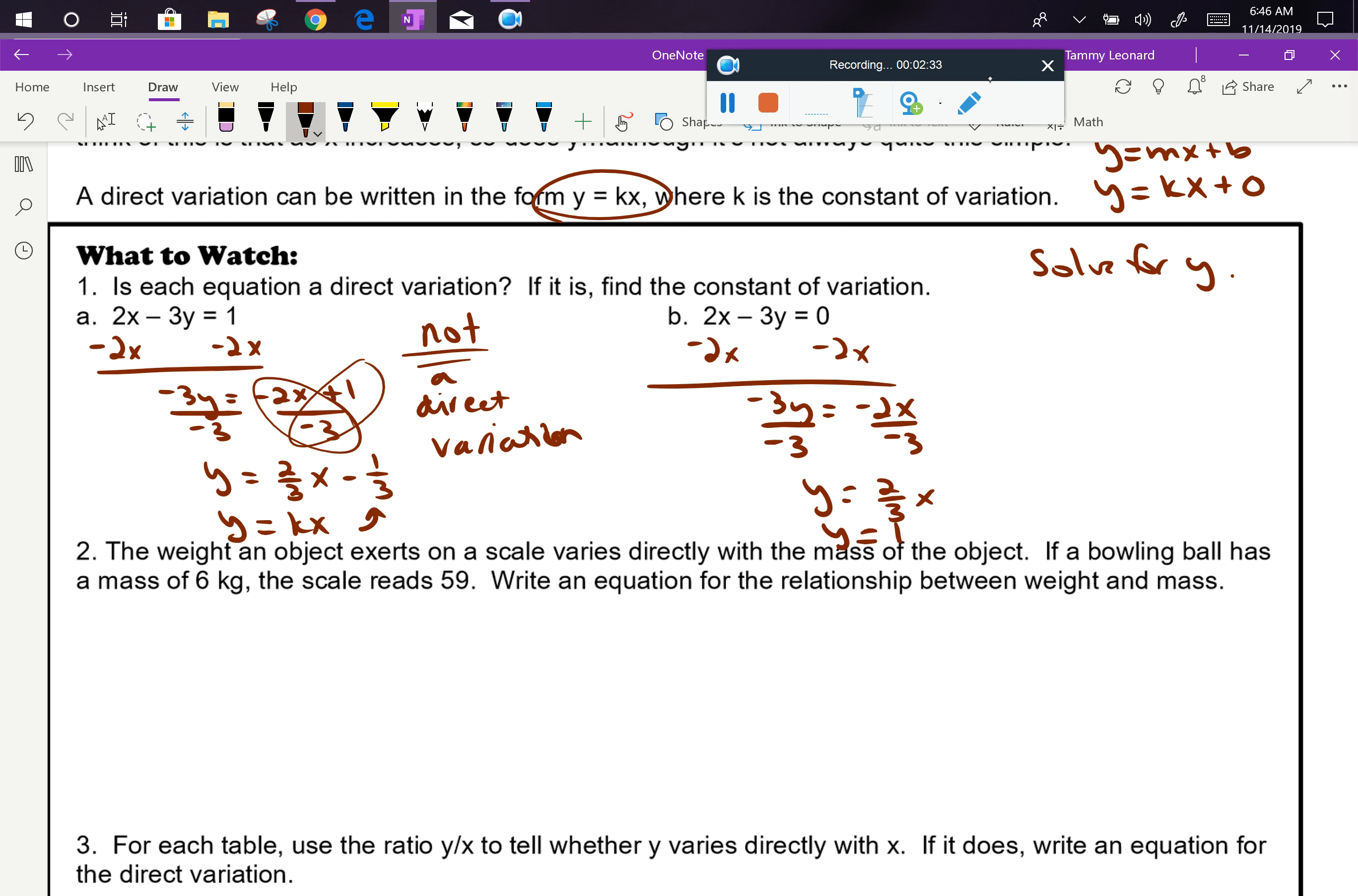Now when I compare this to y equals kx, I see that all the pieces line up. This is in the y equals kx format and the number 2 thirds is in the position of k. So yes, this is a direct variation. And we can determine its constant with a constant of 2 thirds.